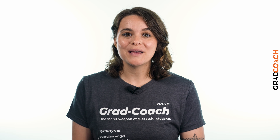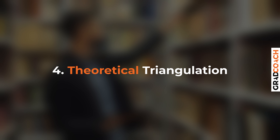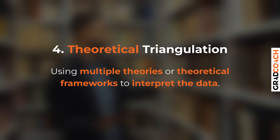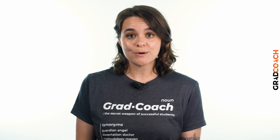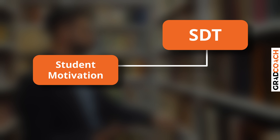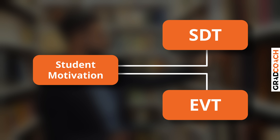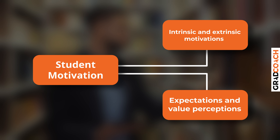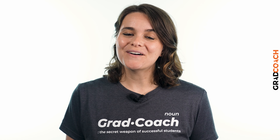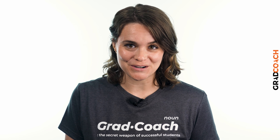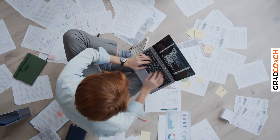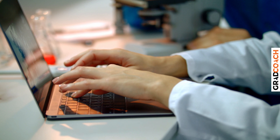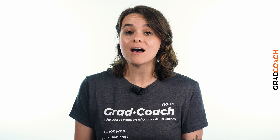Last but not least, we have theoretical triangulation. This approach involves using multiple theories or theoretical frameworks to interpret the data. For example, if your study was exploring student motivation, you could assess the data through the lens of both self-determination theory (SDT) and expectancy value theory (EVT). The former focuses on the intrinsic and extrinsic motivations of students, while the latter hinges on expectations and value perceptions. The key idea is that by applying different theoretical perspectives to the same data set, you can achieve a more comprehensive understanding of the phenomena you're studying.